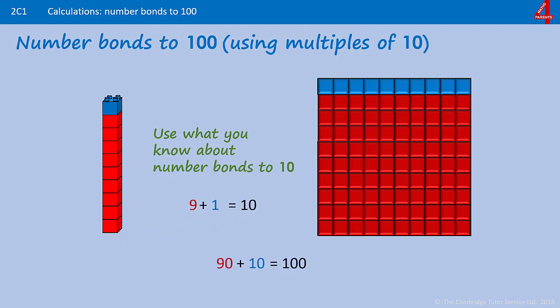And if you compare those numbers from the number bond to 10, we've just multiplied each number by 10 to get the number bond to 100. So 9 has been multiplied by 10 to 90, 1 has been multiplied by 10 to 10, and 10 has been multiplied by 10 to 100.